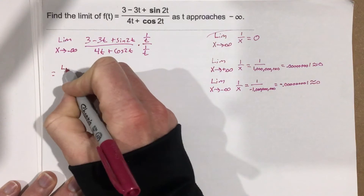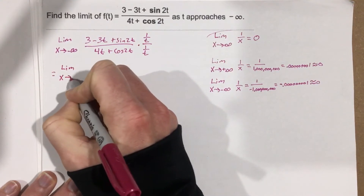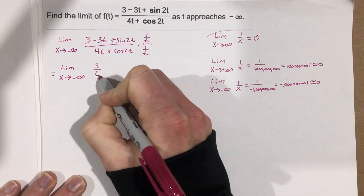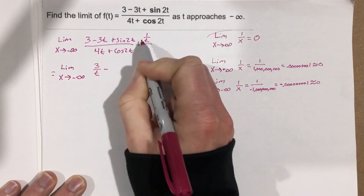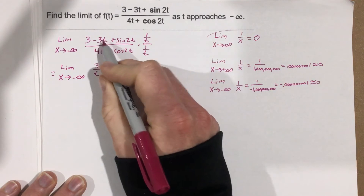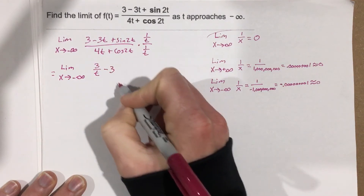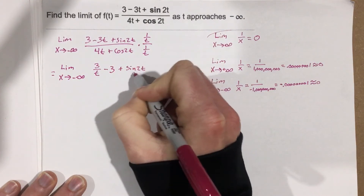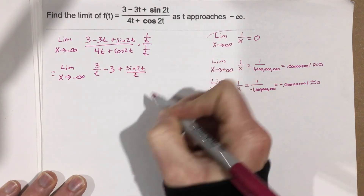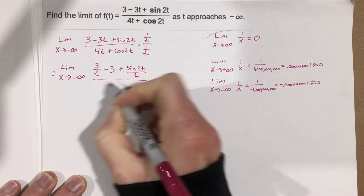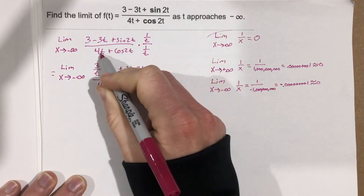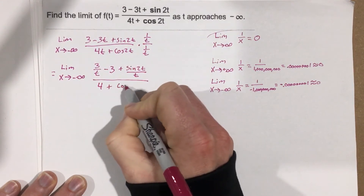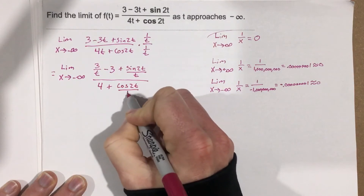So this is going to equal the limit as t approaches negative infinity. When I multiply by 1 over t I get 3 over t, minus when I multiply 1 over t times negative 3t I get negative 3, plus sine of 2t all over t — and that's over 4, because 1 over t times 4t cancels the t, plus cosine of 2t all over t.